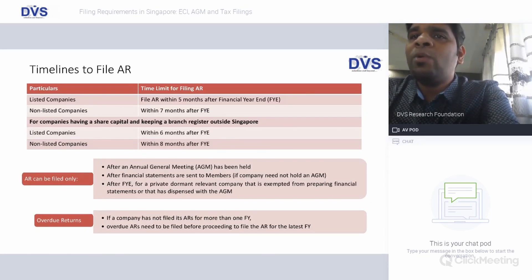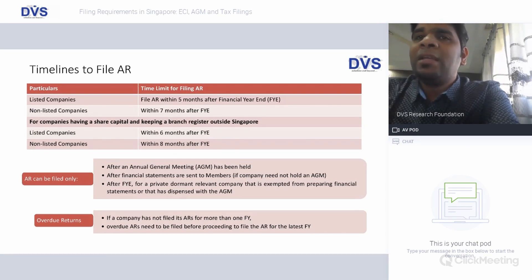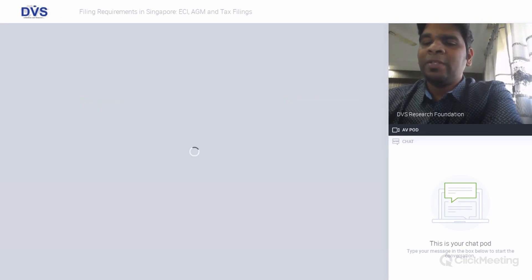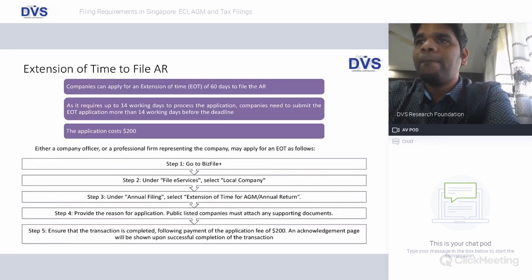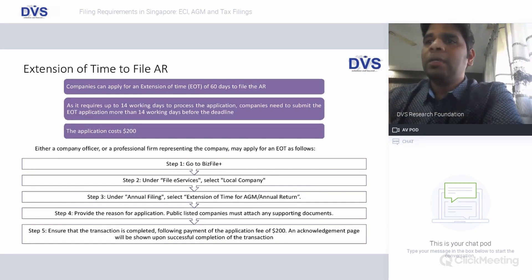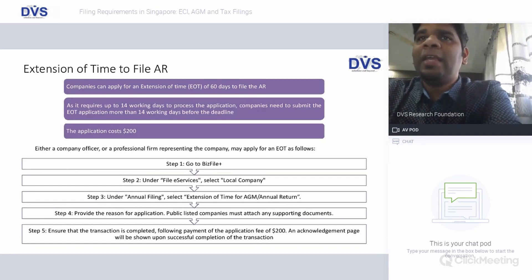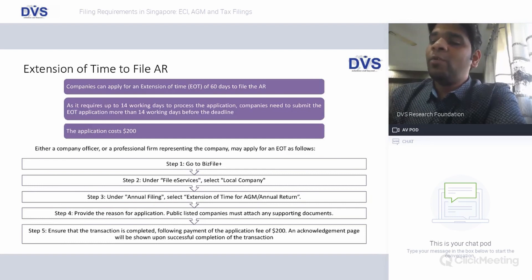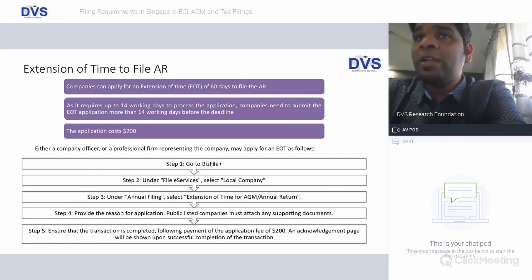If a company has not filed its annual return for more than one financial year, overdue ARs must be filed before proceeding to the filing of the AR for the latest financial year. Previous backlogs must be completed, as this decreases the company's ratings with ACRA, and it is very important for companies to maintain their ratings. Companies can apply for an Extension of Time (EOT) of 60 days to file the AR. To obtain this extension, the company must apply for the EOT at least 14 days prior to the deadline, as ACRA requires 14 days to process the application.